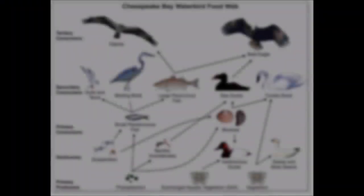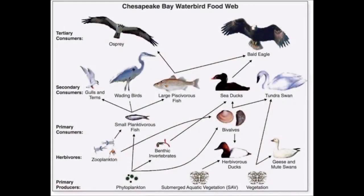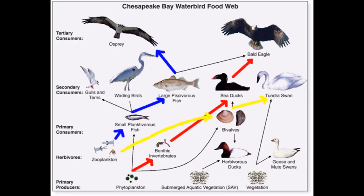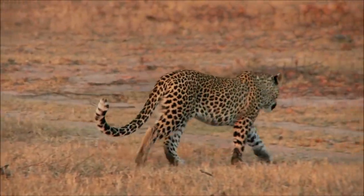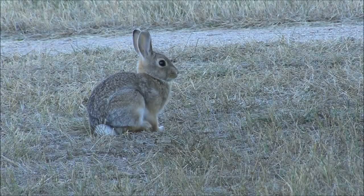Natural ecosystems usually have more complicated food chains. A network of interconnected food chains is called a food web. Arrows are used to show which direction the energy flows and help keep track of the connections between organisms. Now that you understand a little bit more about food chains, see if you can find the connections between living things around you.